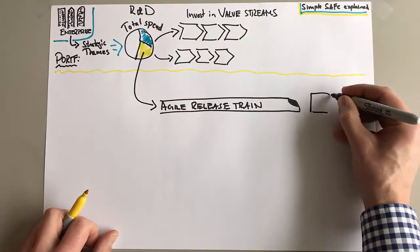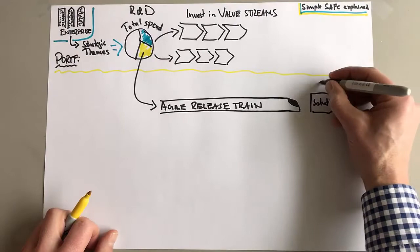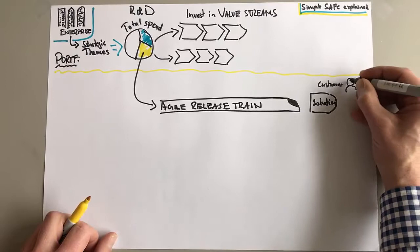We call it an Agile Release Train in SAFe. It sounds cooler - that's certainly one reason. But also, if you're doing a transition, if you're going to work in a new way, new words can actually help.